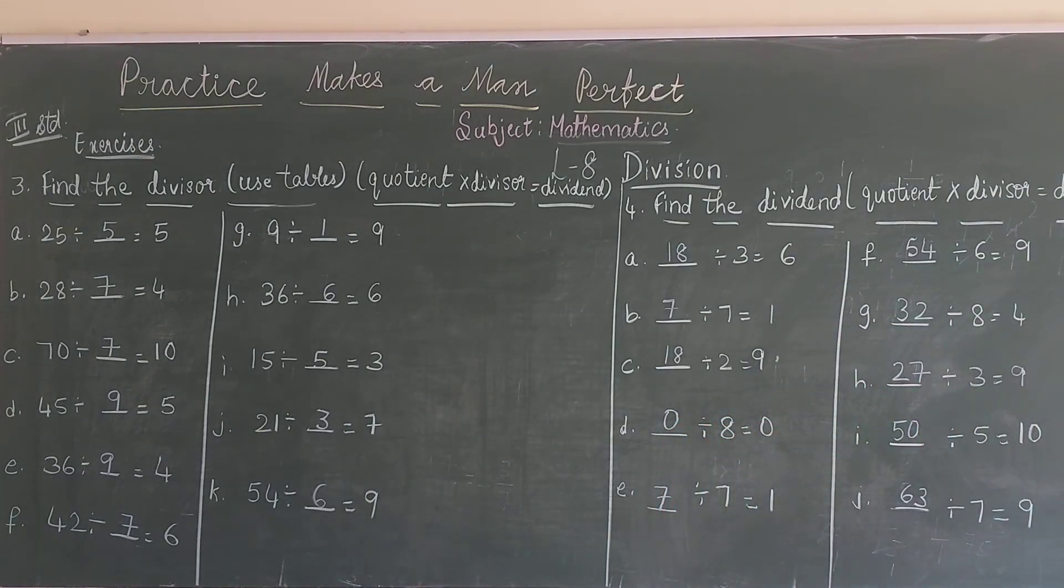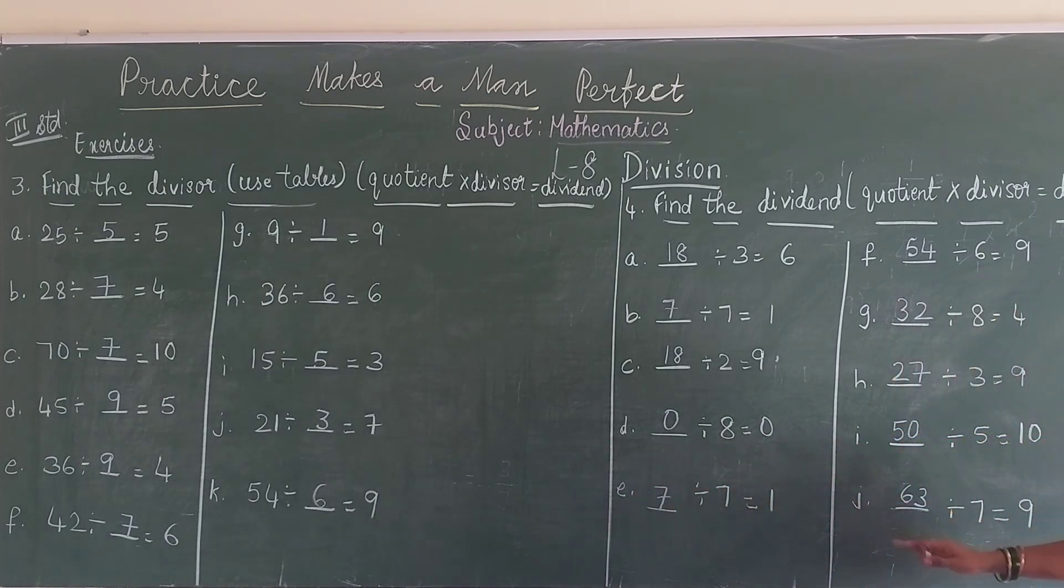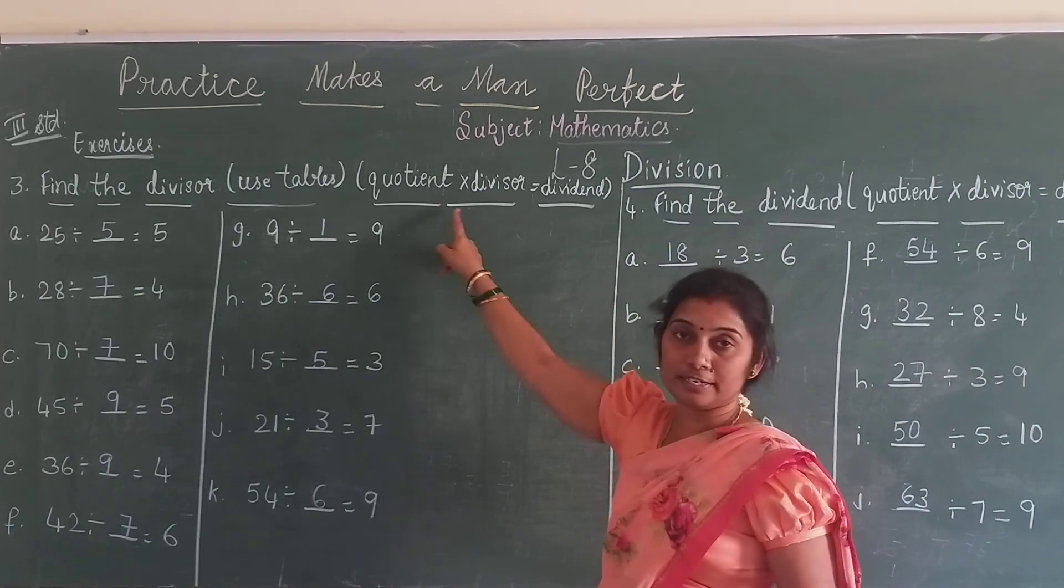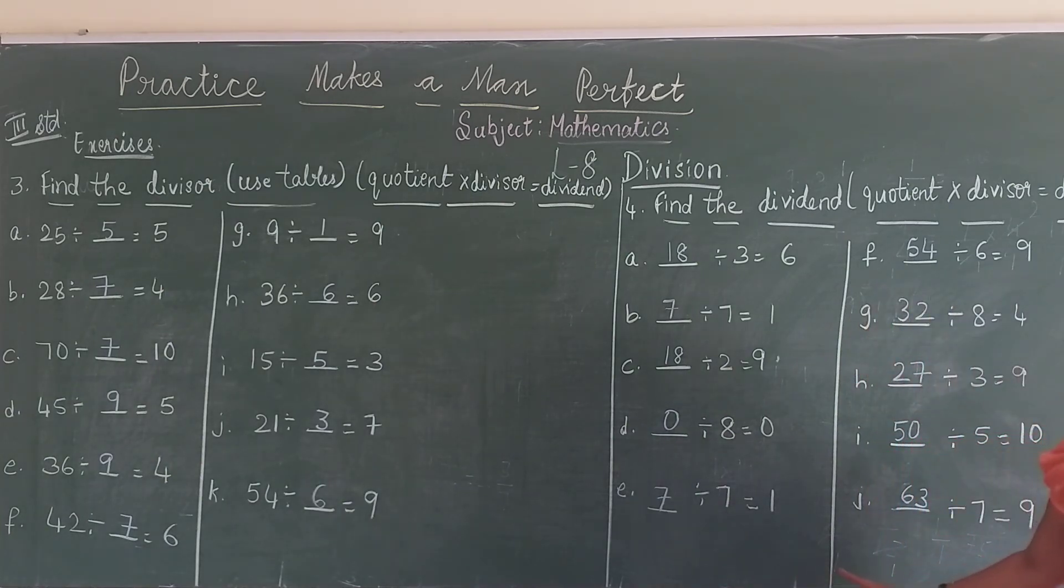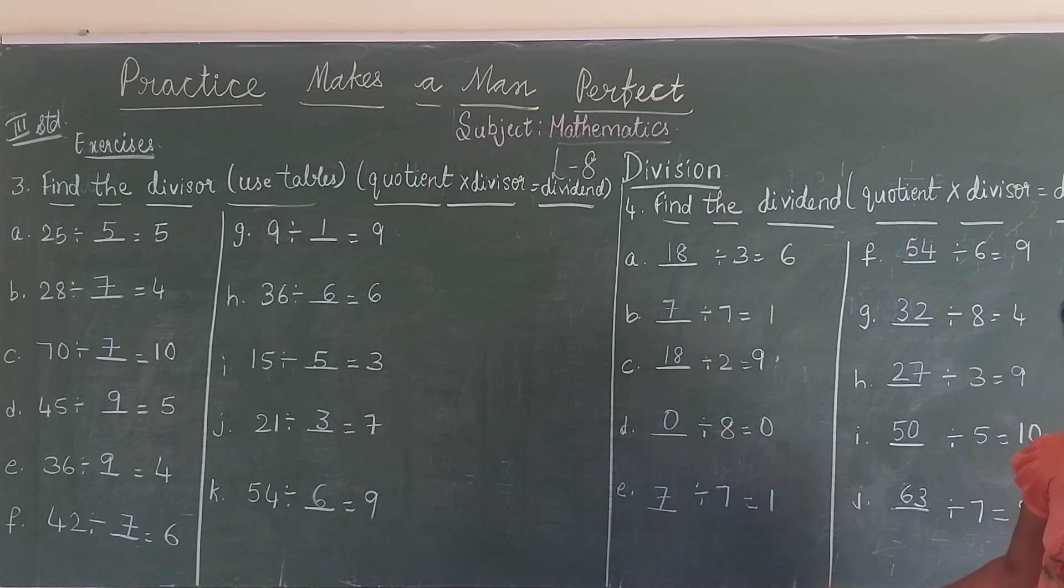So you got it now, how to find your divisor using the tables. How you are finding your dividend using your tables. Your dividend will be equal to, always you should remember this, quotient into divisor. So let me stop here. Same thing you will write in your textbook as your homework in your classwork lecture. Okay, fine.